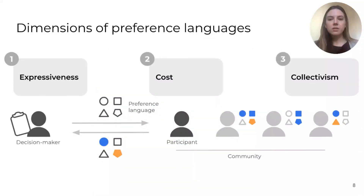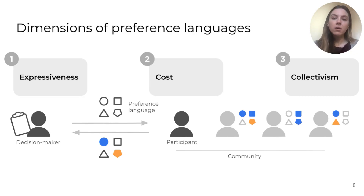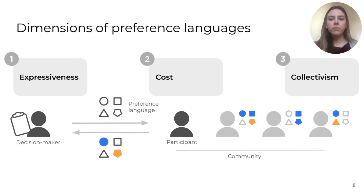Based on our analysis of the student assignment context, as well as the literature on other preference-based systems, we define three dimensions of preference languages that we can look at to understand how the design of these languages shapes and can limit opportunities for participation. These dimensions are expressiveness, cost, and collectivism. I'll explain each of these in a little more detail before moving on to discuss potential paths forward.